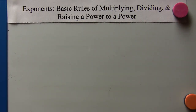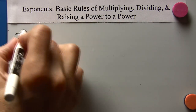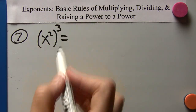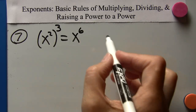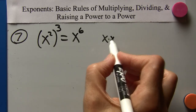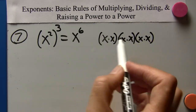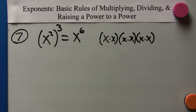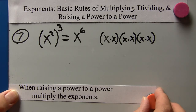Now, raising a power to a power. Example 7: we have x squared, quantity cubed. When we raise a power to a power, we multiply the exponents, so that gives us x to the sixth. Breaking it down: x squared cubed means x times x, three times over — that's six x's multiplied together, confirming x to the sixth. The rule: when raising a power to a power, multiply the exponents.